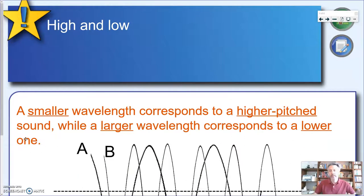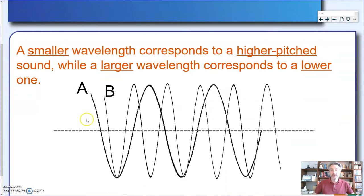So, the wavelength, while the amplitude was related to loud or quiet, so these were the two extremes. Here we have high and low, as in high pitch and low pitch. A smaller wavelength corresponds to a higher-pitched sound, and a larger wavelength, which means waves which are more spread out, corresponds to a lower one.